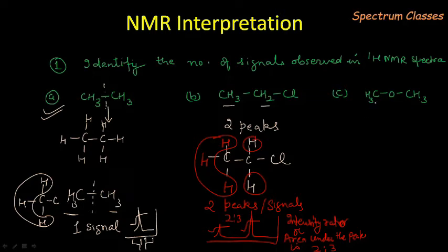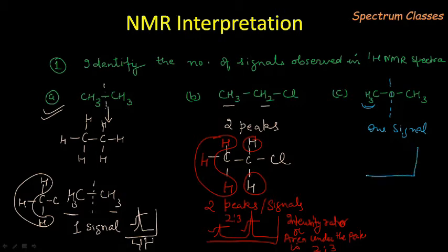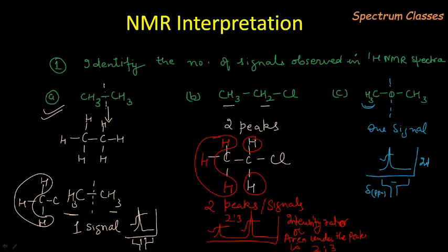This is my third molecule. First, we check whether there is symmetry — yes, there is symmetry. So these two methyl groups are of same type, giving only one signal. These three protons are of same type. The area under the peak corresponds to the protons here, and in the NMR spectrum, the value is given with delta ppm on the x-axis and intensity on the y-axis.